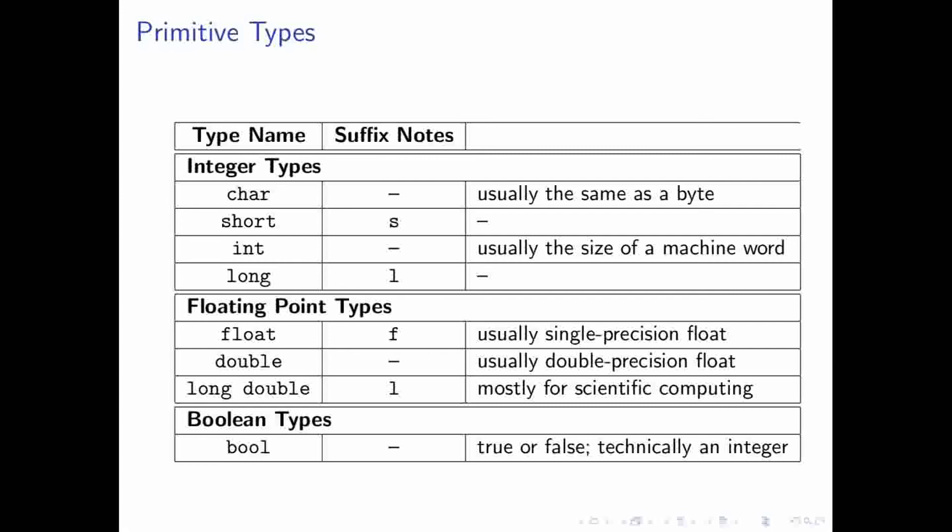And you also have various floating point types as well. And the Boolean type, which is technically an integer.